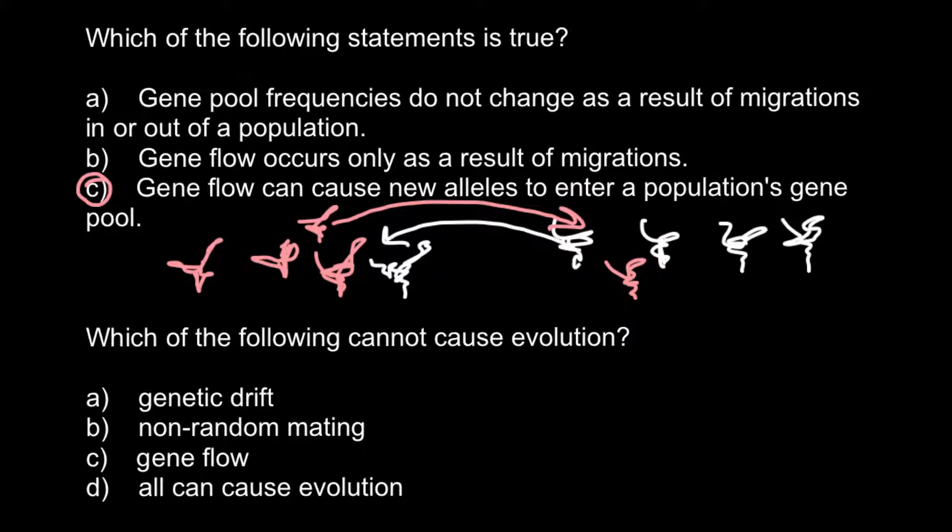Next question: which of the following cannot cause evolution? Once again, we have four answers to choose from. Answer A: Genetic drift. And what is genetic drift?